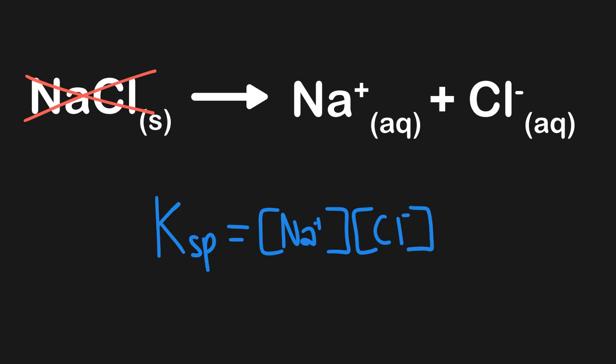Again, if the Ksp value is increasing, that would tell us that NaCl has a really high solubility. However, if the Ksp for NaCl is lower, it tells us that it has lower solubility. In this way, we can use Ksp to compare multiple different solubility values really easily.